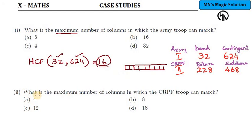Similarly, the second question also is, what is the maximum number of columns in which CRPF troops can march? So what is it? You have to find the HCF of 228 and 468. So the answer here, HCF of 228 and 468 is nothing but 12 columns. So maximum number of columns, it is 12 columns.